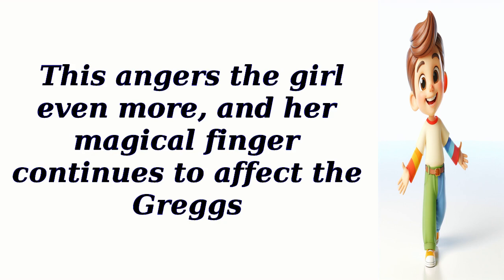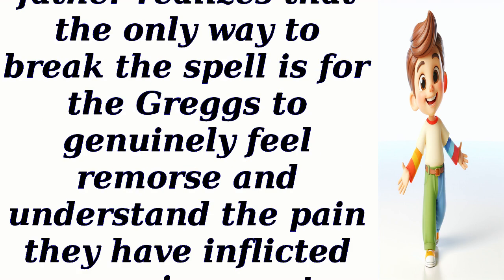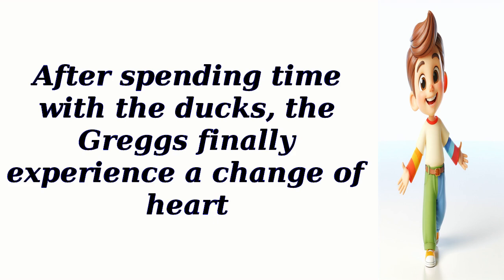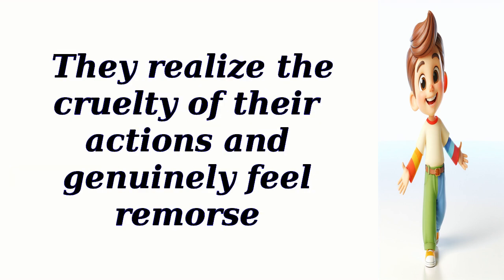This angers the girl even more, and her magical finger continues to affect the Greggs. Eventually, the girl's father realizes that the only way to break the spell is for the Greggs to genuinely feel remorse and understand the pain they have inflicted upon innocent creatures. He convinces them to spend time with the ducks they used to hunt, hoping they will empathize with the animals and learn a valuable lesson. After spending time with the ducks, the Greggs finally experience a change of heart. They realize the cruelty of their actions and genuinely feel remorse.